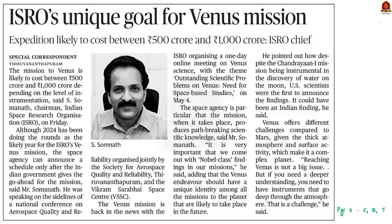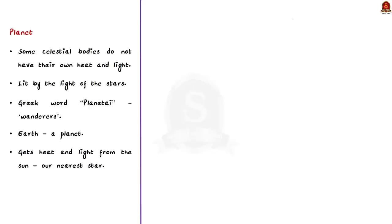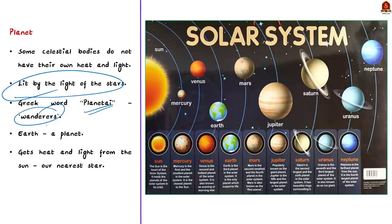Let us move on to the next news article. This article talks about ISRO's unique goal for the Venus mission. Today let us revise some basic concepts about planet Venus and then discuss facts about ISRO's mission. First, what is a planet? Some celestial bodies do not have their own heat and light; they are lit by the light of stars and are called planets. The word planet comes from the Greek word 'planetai', which means wanderers.